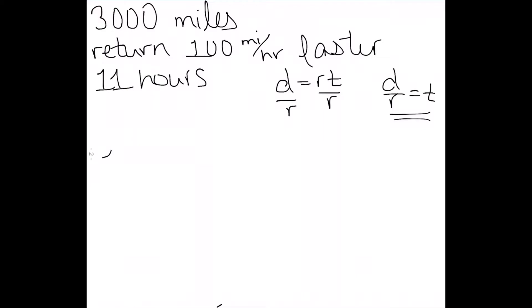So we know that our total time was 11 hours. The first trip, the distance is 3,000, and our rate we'll call x. And the 11 hours is the first trip plus the second trip.